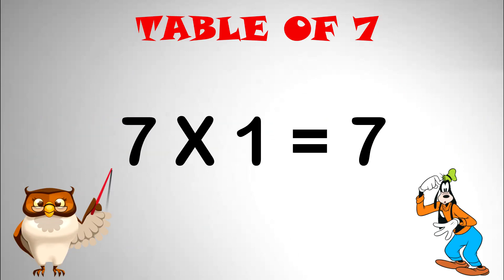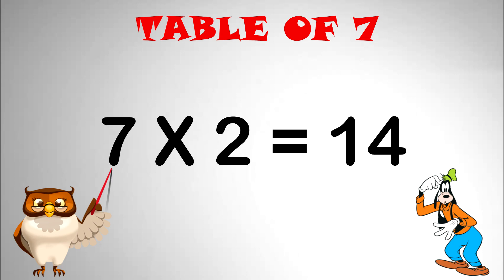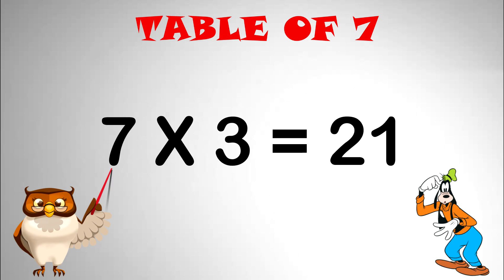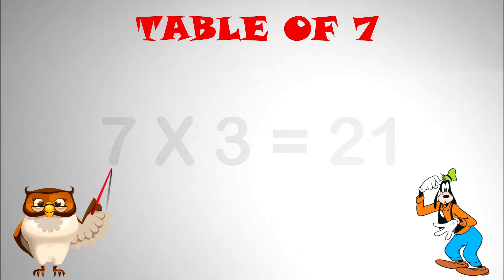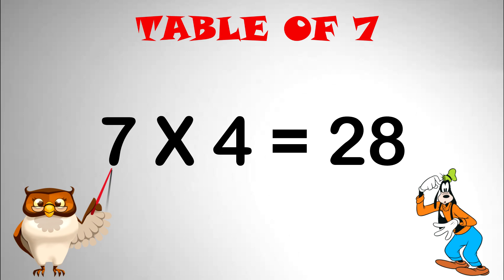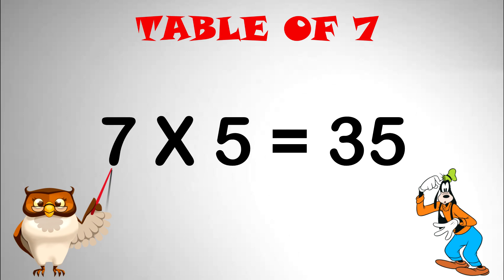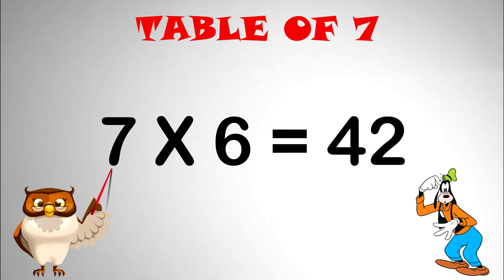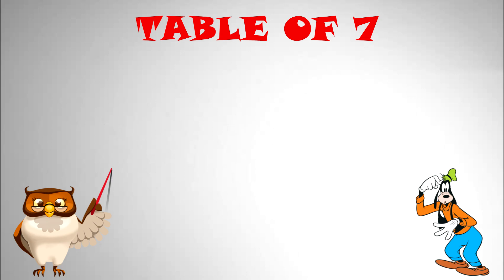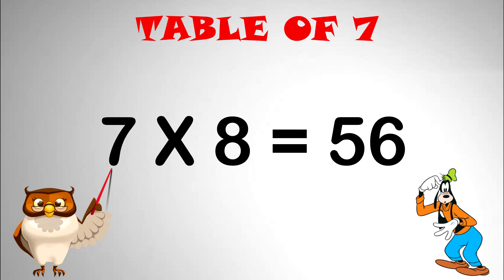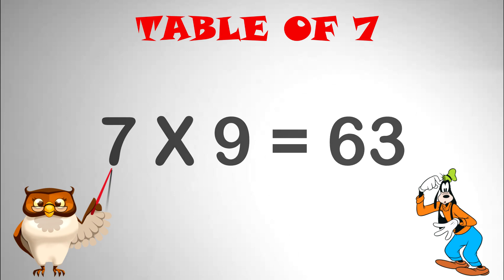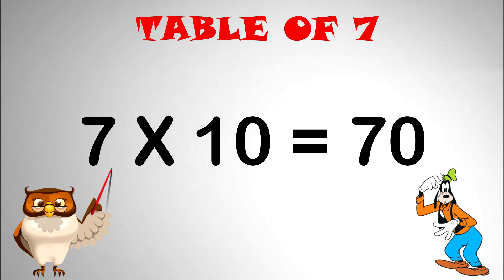Table of 7. 7 x 1 equal to 7. 7 x 2 equal to 14. 7 x 3 equal to 21. 7 x 4 equal to 28. 7 x 5 equal to 35. 7 x 6 equal to 42. 7 x 7 equal to 49. 7 x 8 equal to 56. 7 x 9 equal to 63. 7 x 10 equal to 70.